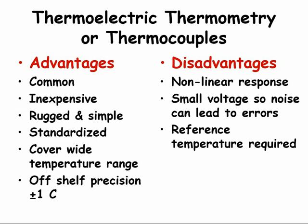Thermocouples do have some disadvantages that need to be managed. In many cases, the disadvantages can be managed fairly easily, hence thermocouples are common devices. Thermocouple dissimilar metal junctions generate a small voltage or electromotive force based on temperature. Unfortunately, the relation between the electromotive force and temperature is non-linear. We generally prefer sensors that have linear relations between input and output, but thermocouples have non-linear relations, so the relation has to be found and used.